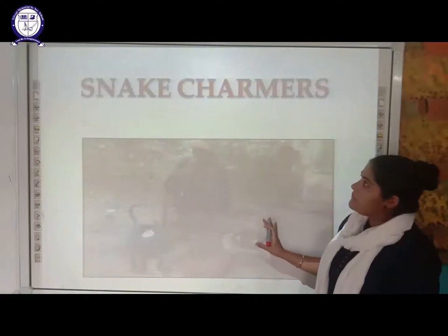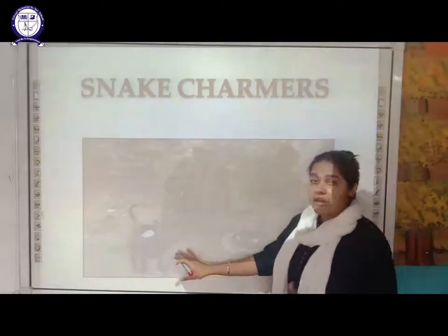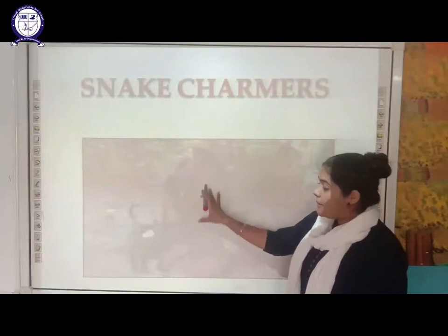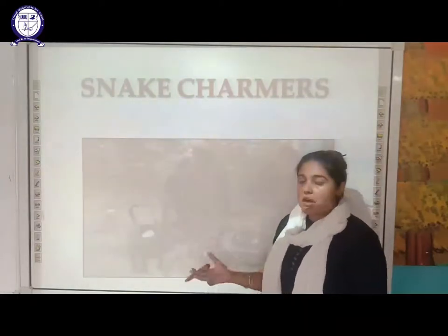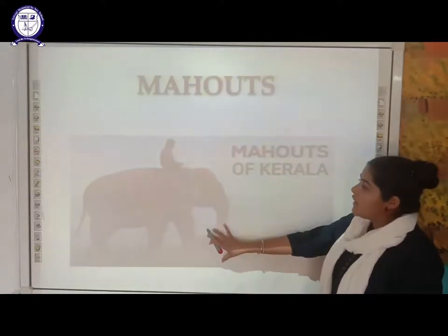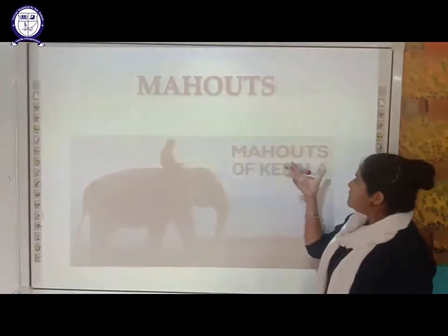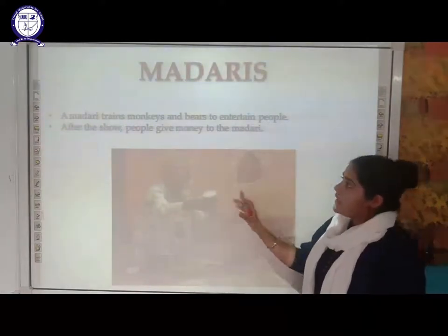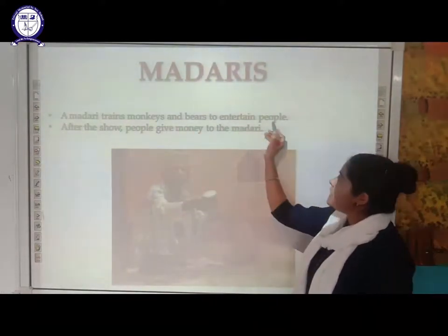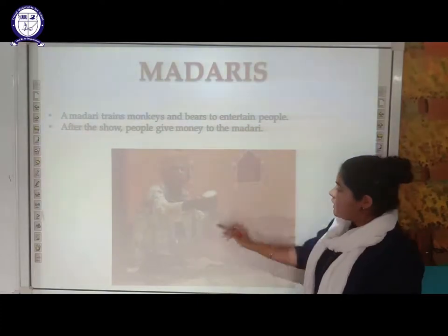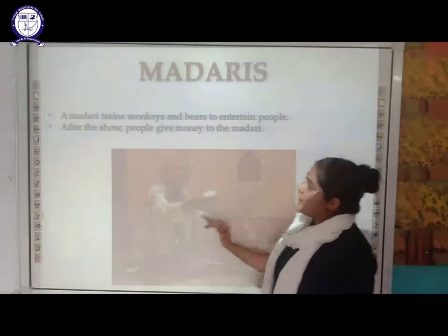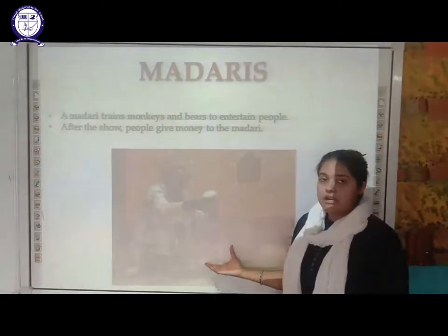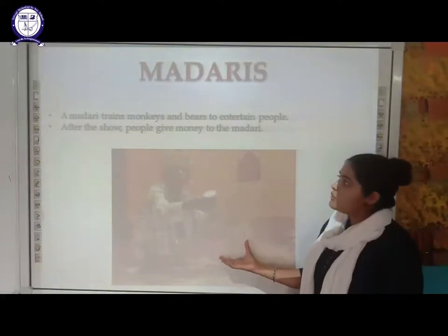The first diagram depicts the snake charmers. The snake charmer used to play the been, and the snake would dance to it, earning money for the charmer. Next is the mohar — a mohar is one who trains the elephant, specifically this depicts a mohar of Kerala. The madari is the one who trains monkeys and bears to entertain people. After the show, people give money to the madari.